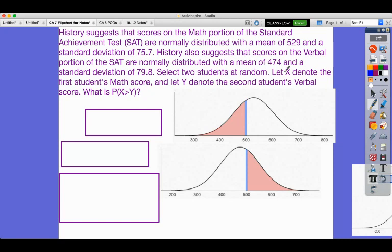So we select two students at random, let X denote the first student's math score and Y denote the second student's verbal score. What's the probability that the first student's math score is higher than the second student's verbal score?